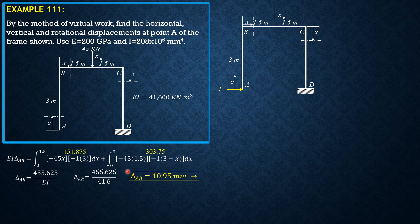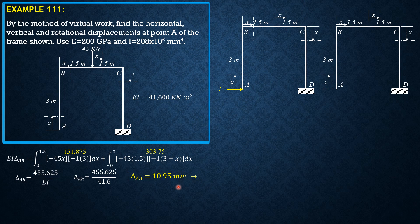Multiplying further by 1000 mm per meter gives the result in millimeters — rightward. Next, for the vertical displacement at point A, we apply an upward unit virtual force of 1 at A. Again, big M is zero for the first two segments, so we begin with the relevant section.